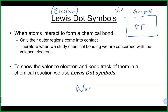For example, sodium is group one, so we basically just write sodium with one dot — that's our Lewis dot symbol. Calcium is group two with two valence electrons, so we do two dots. There's really no strict rule for Lewis dot symbols other than: you use the symbol, and on that symbol there are four sides, so you shouldn't put more than two electrons on each side — for a grand total of eight.